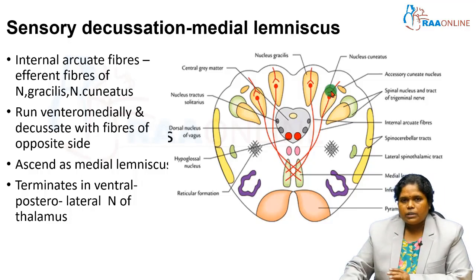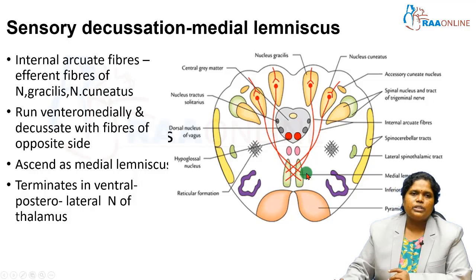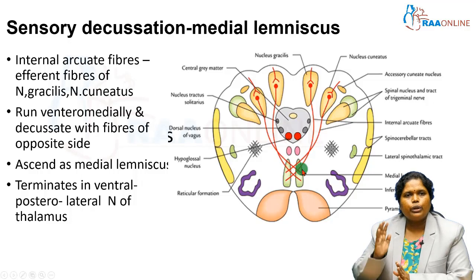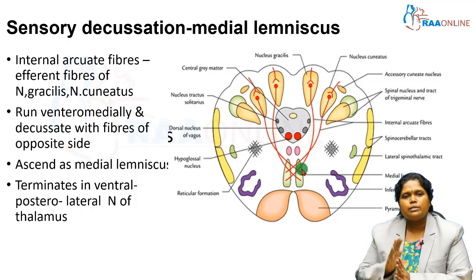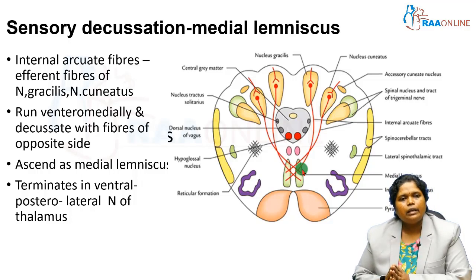The second-order fibers start from the nucleus gracilis and cuneatus, decussate with opposite fibers, and then ascend. After making a decussation, they ascend as the medial lemniscus. This medial lemniscus then relays in the thalamus — specifically in the VPL nucleus of the thalamus.